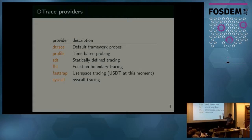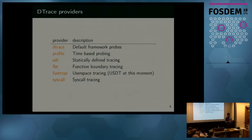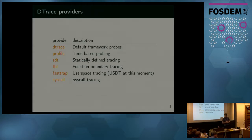To give you an idea of what a provider is: we have a D-trace provider, which is just the framework itself with three simple probes. We have a profile provider that creates a probe firing periodically on one or multiple CPUs. We have an SDT provider — statically defined tracing, equivalent to tracepoints in the Linux kernel. Function boundary tracing is similar to K-probes — it scans kernel modules for instrumentable symbols. There's also a faster provider for user space. And we have a syscall provider to observe and instrument syscalls.